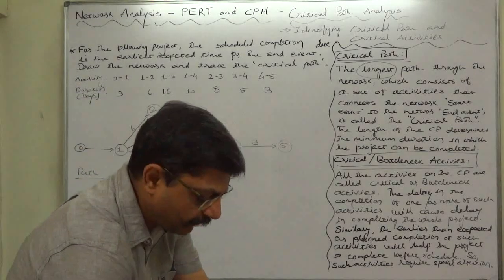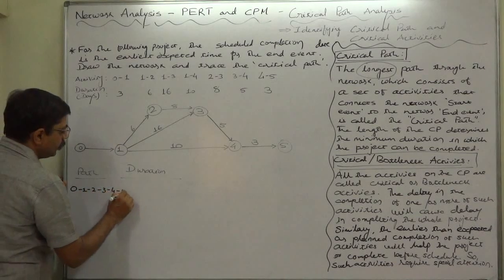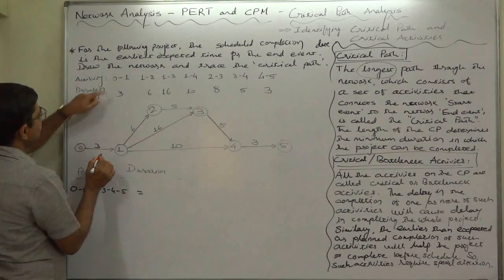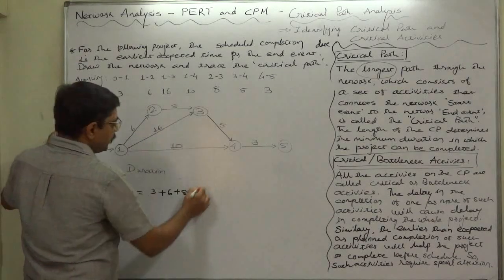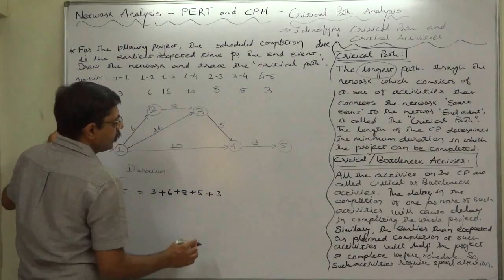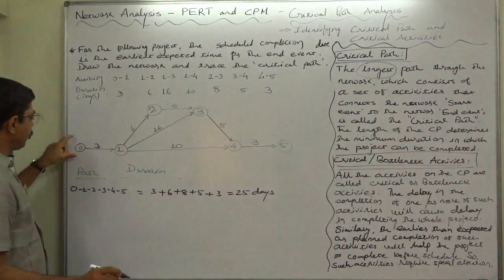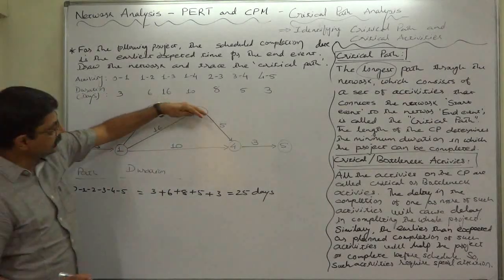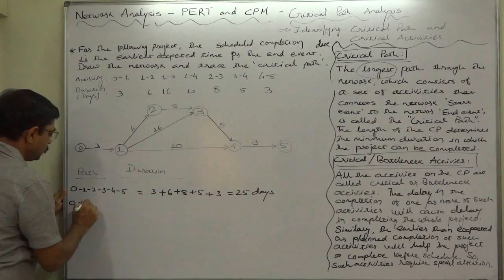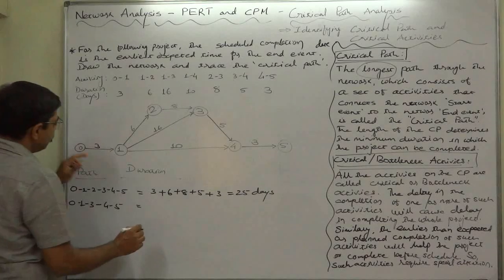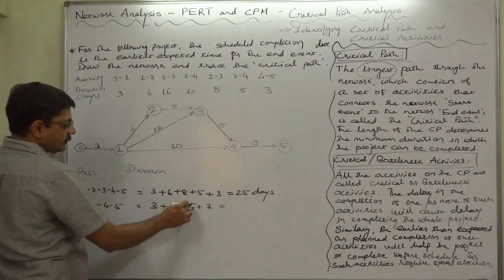For the first path, 0 → 1 → 2 → 3 → 4 → 5: the duration is 3 days for 0–1, plus 6 days for 1–2, plus 8 days for 2–3, plus 5 days for 3–4, plus 3 days for 4–5, giving 3 + 6 + 8 + 5 + 3 = 25 days. Another possible path is 0 → 1 → 3 → 4 → 5, which takes 3 + 16 + 5 + 3 = 27 days.